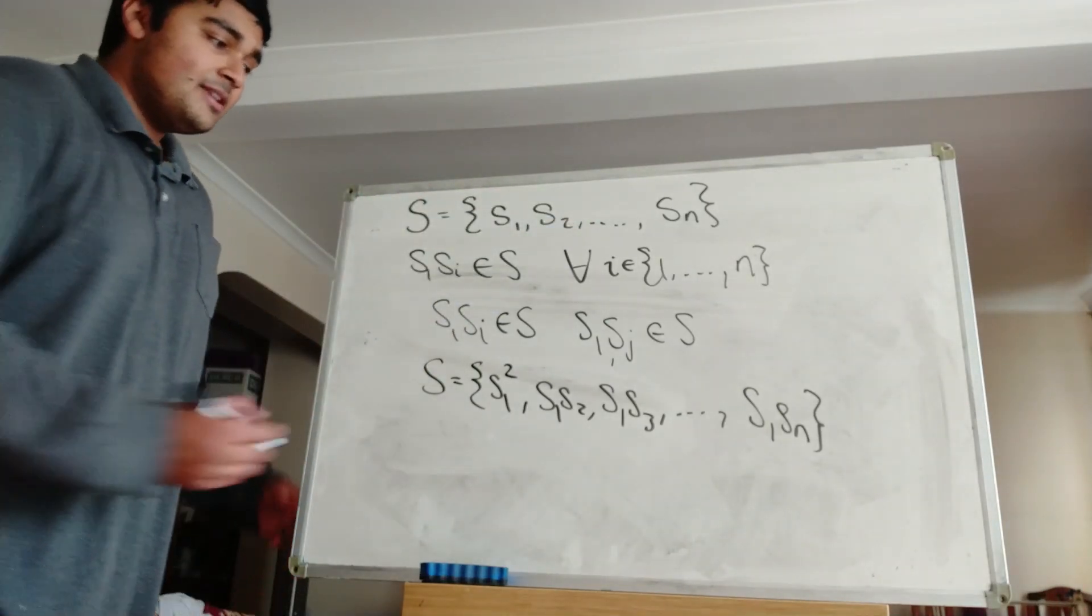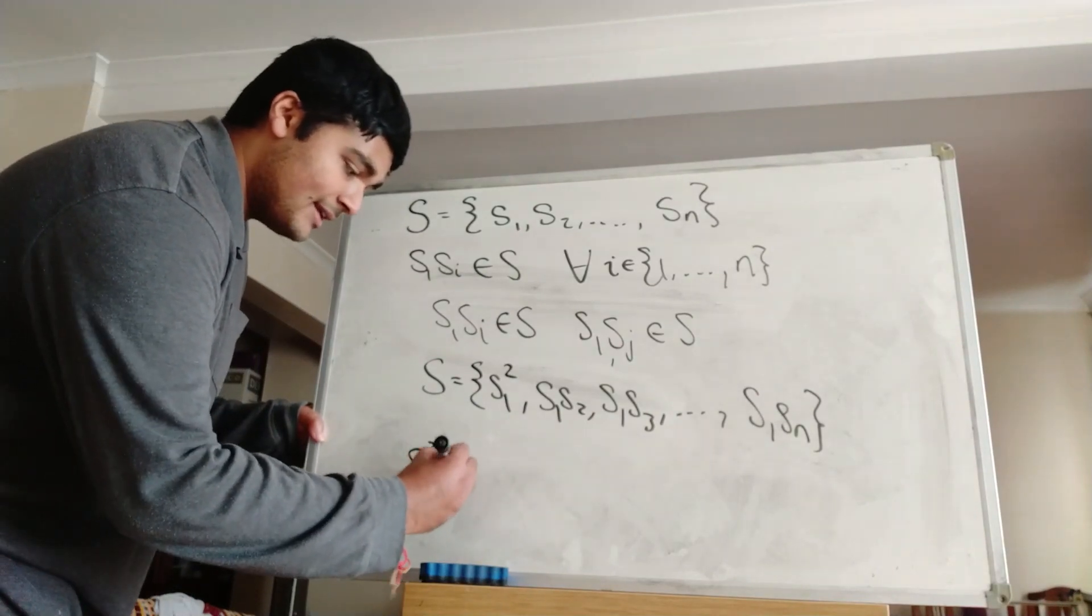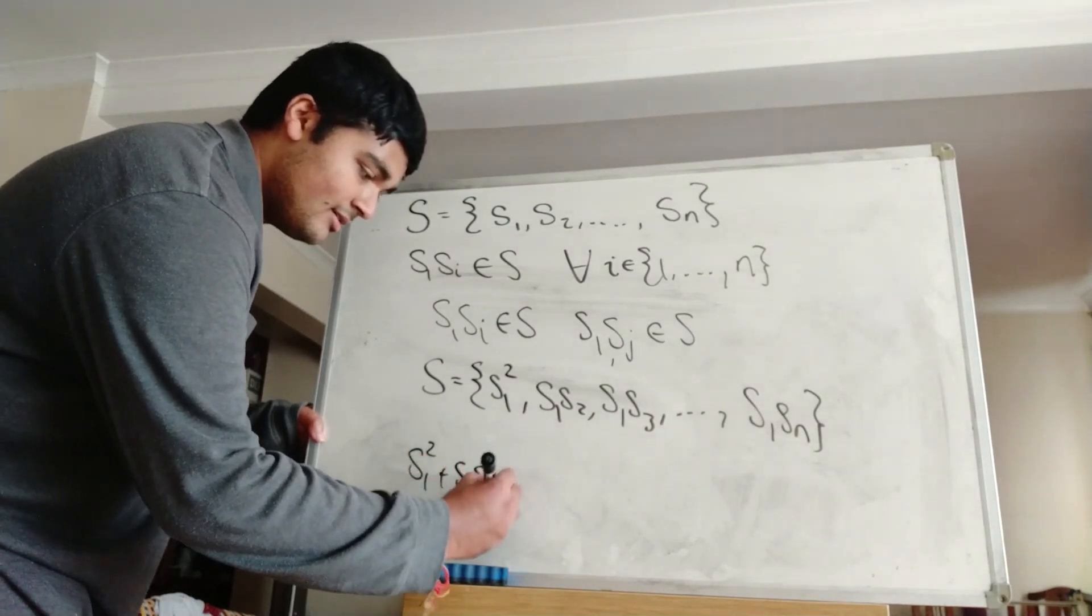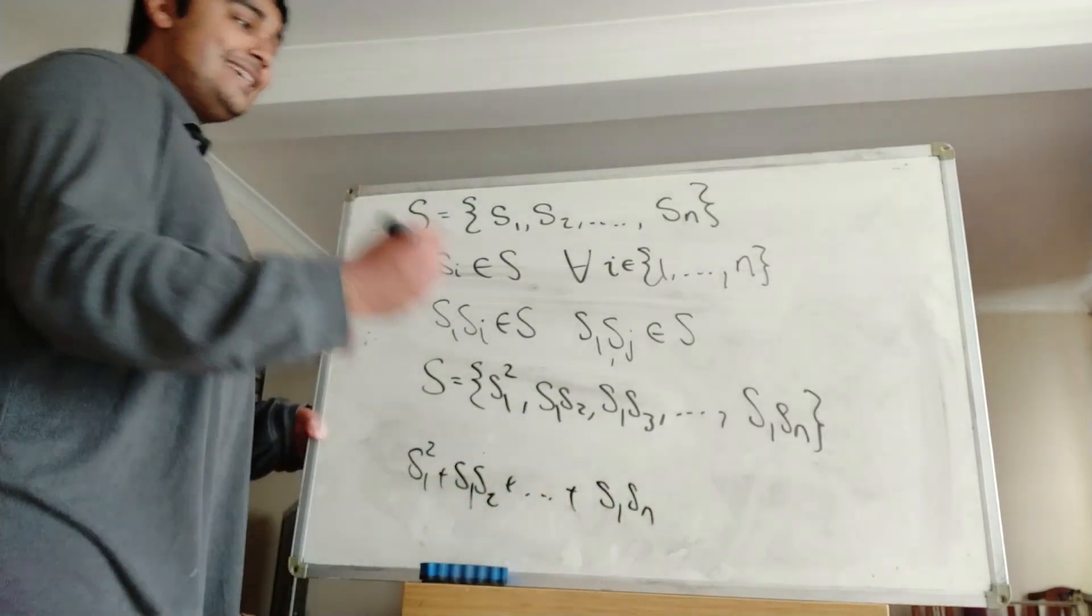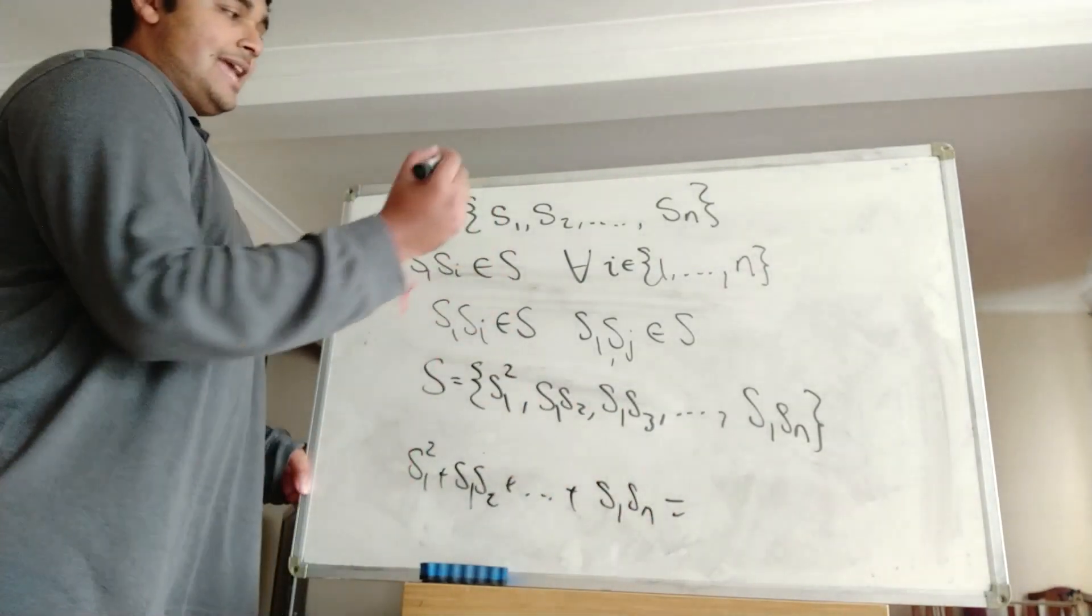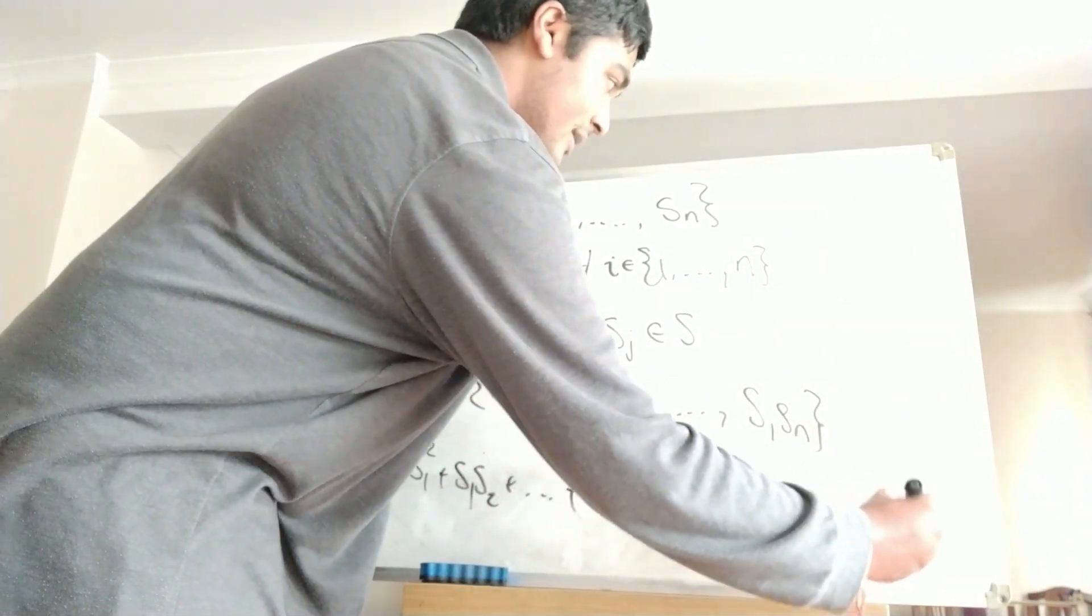So if I go ahead and do that, so if I add up all these terms here, I'm going to get S1 squared plus S1 S2 plus so on, all the way up to S1 SN. And that's going to equal S1 plus S2 plus so on, all the way up to SN.